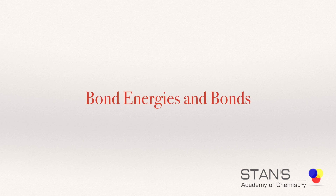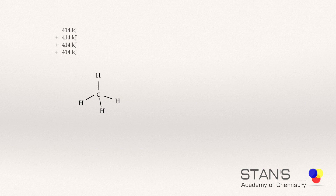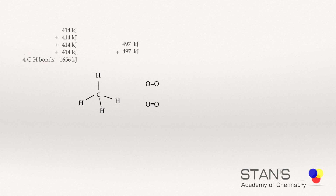Next, we will assign bond energies to each bond and calculate the energy changes associated with them. In CH₄ there are four C–H bonds. The bond energy for the C–H bond is 414 kJ, so breaking four moles of C–H bonds requires 4 × 414 = 1,656 kJ. Next, we break the bonds in oxygen — every oxygen molecule has a double bond with a bond energy of 497 kJ. Since we break two moles of O₂, the total energy required is 2 × 497 = 994 kJ. The total energy required to break all bonds in the reactants is 2,650 kJ.